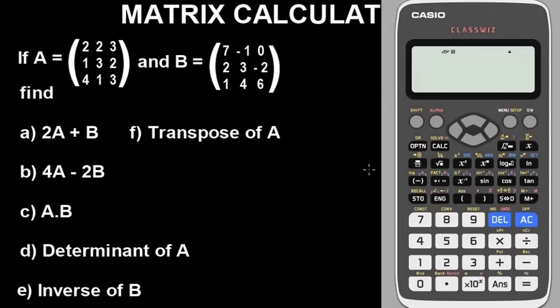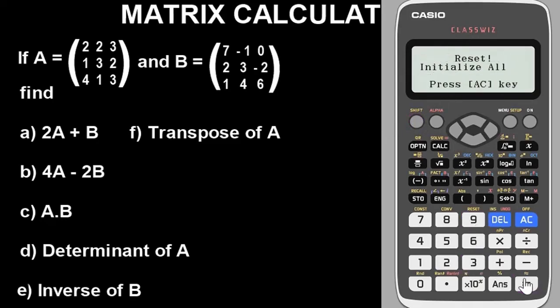This is the Casio calculator. The very first thing you have to do is clear the calculator — put it in default mode to remove whatever previous values or modes you might have set. To clear and put it in default mode, press Shift, then button 9 for the instruction 'Initialize', then press OK and press OK again.